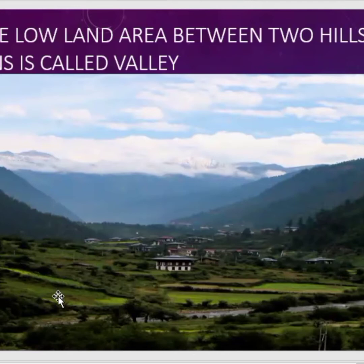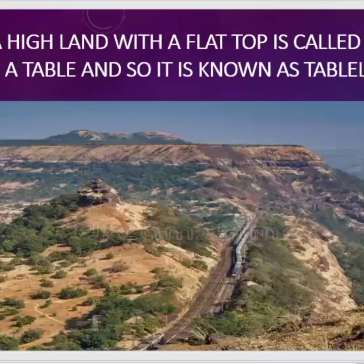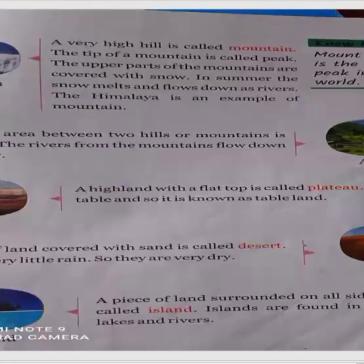The valley is the lowland area between two hills or mountains. And next is a plateau. What is a plateau? A highland with a flat top is called a plateau. It looks like a table, and so it is known as a table land.